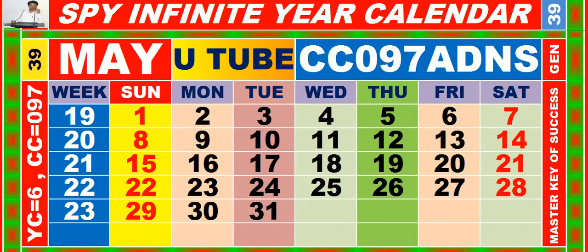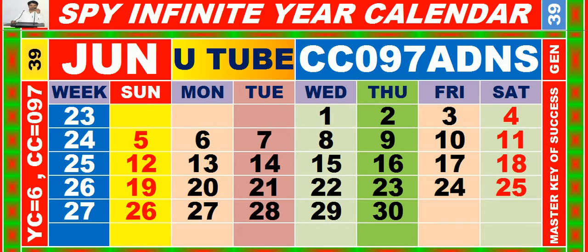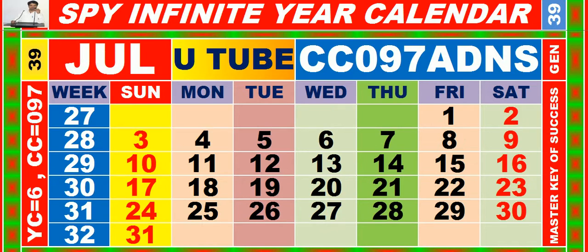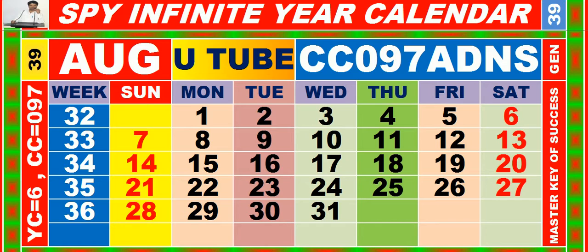Calendar for the month of May having calendar code equal to 097. Calendar for the month of June having calendar code equal to 097. Calendar for the month of July having calendar code equal to 097. Calendar for the month of August having calendar code equal to 097.